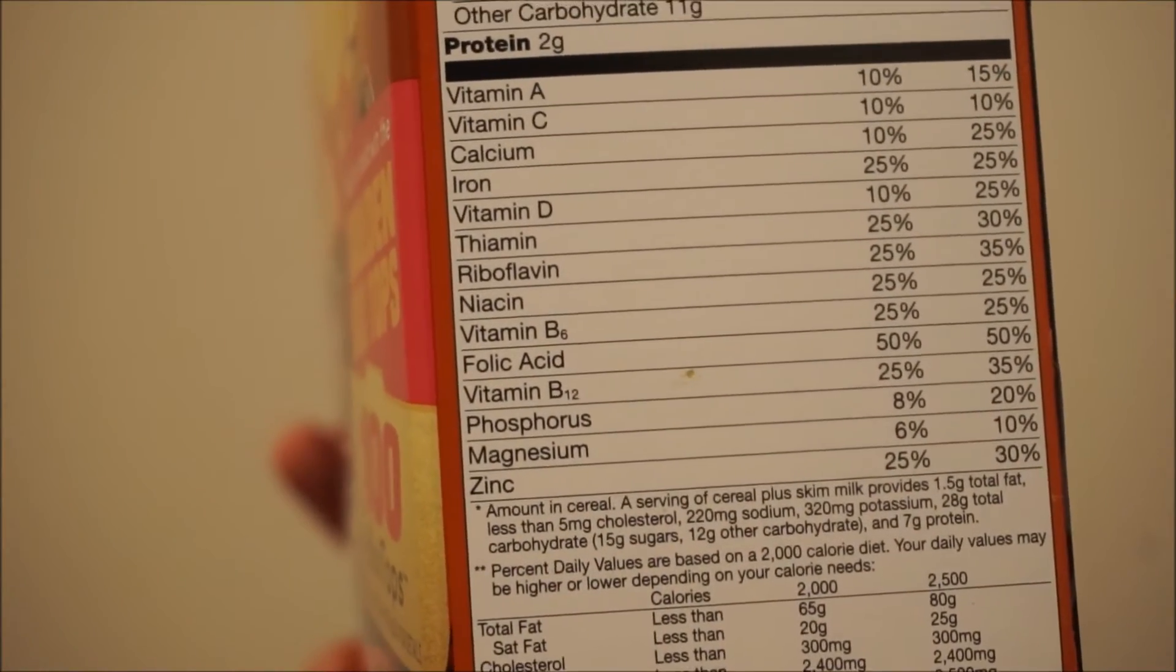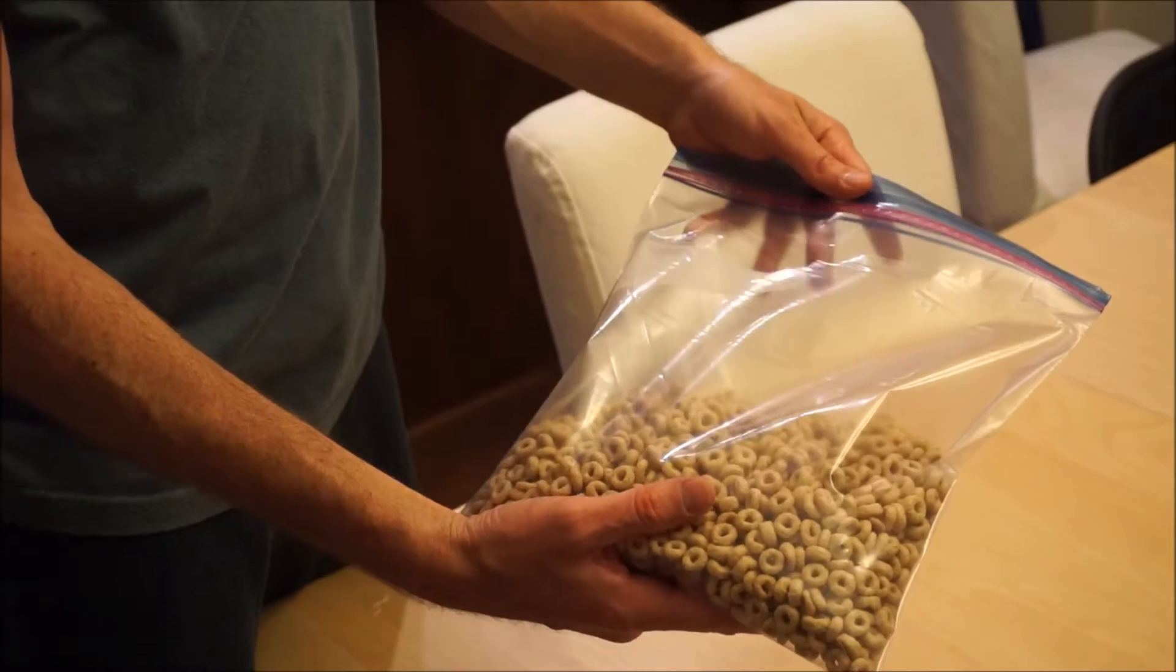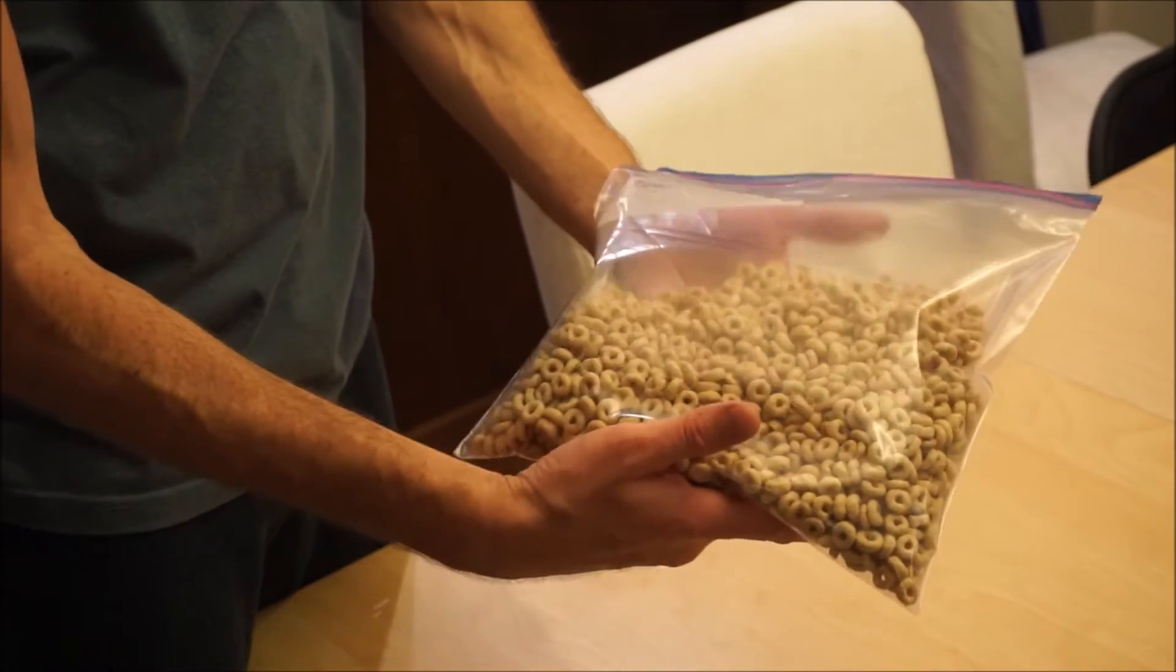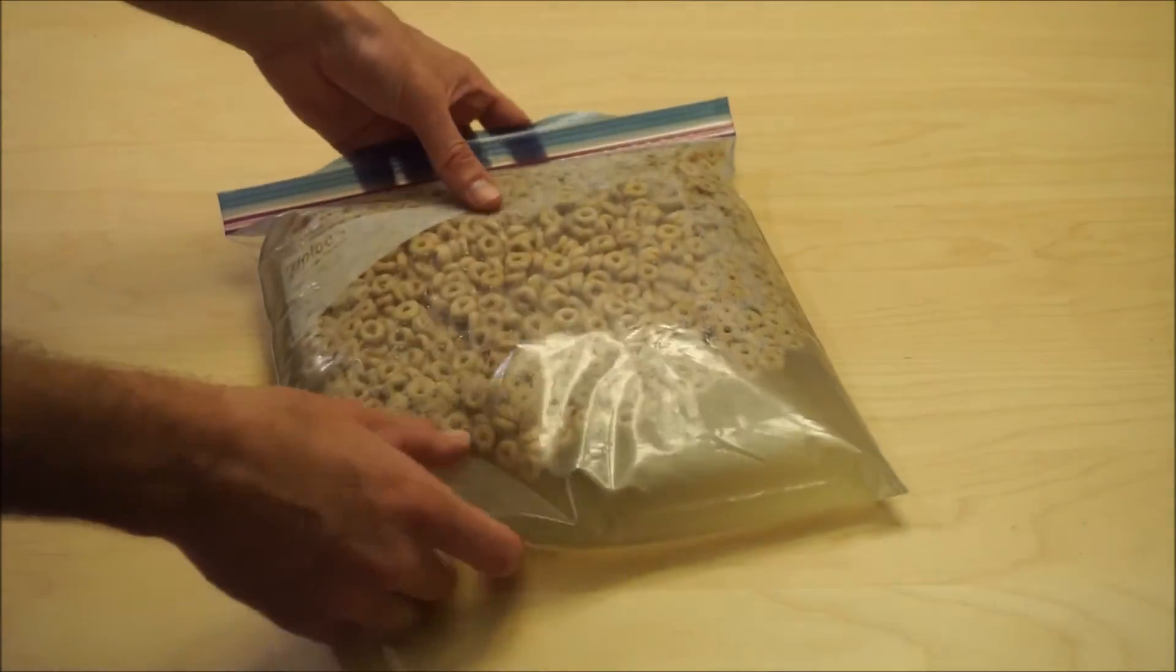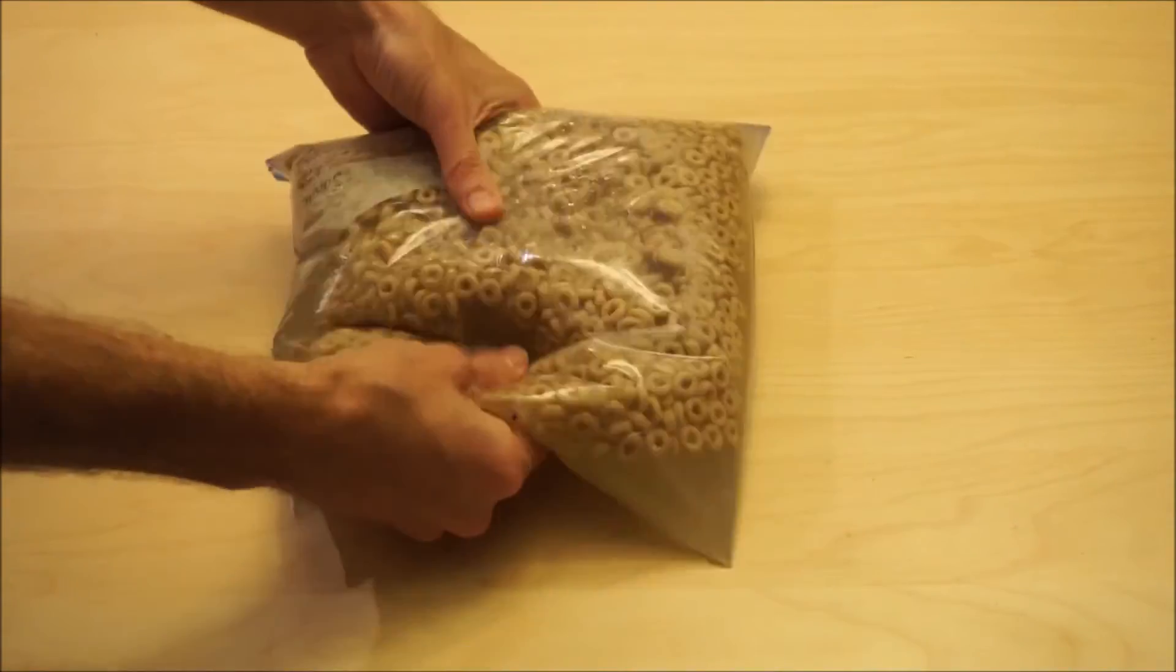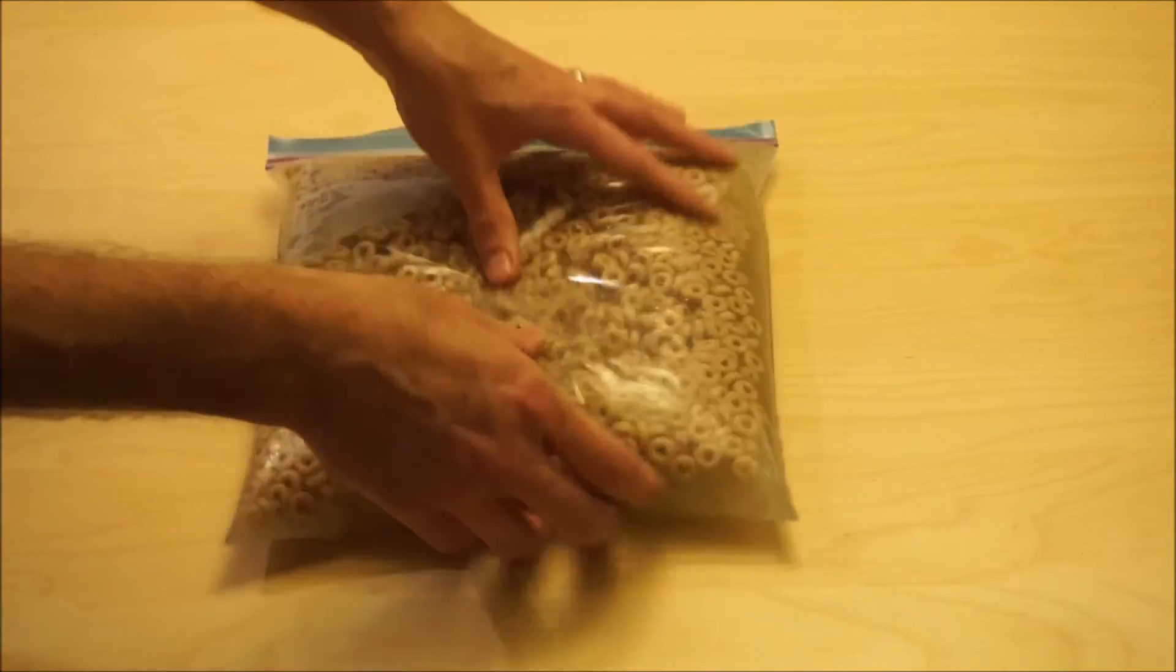Okay, so I fill up a bag with Cheerios and then I add some water to the bag and I mix the Cheerios up. Then once the Cheerios are pretty mixed up, I can start to extract the iron from it.